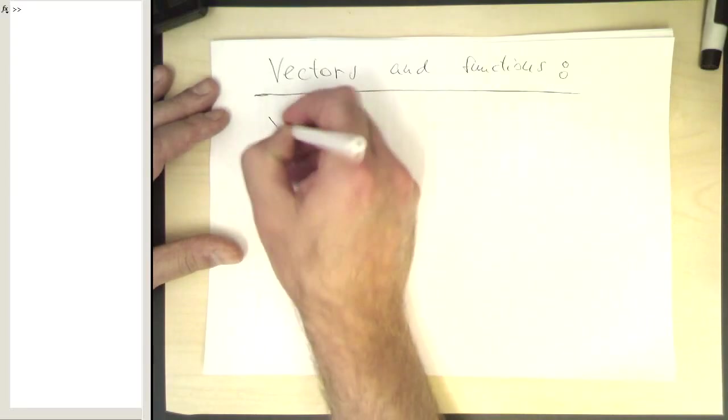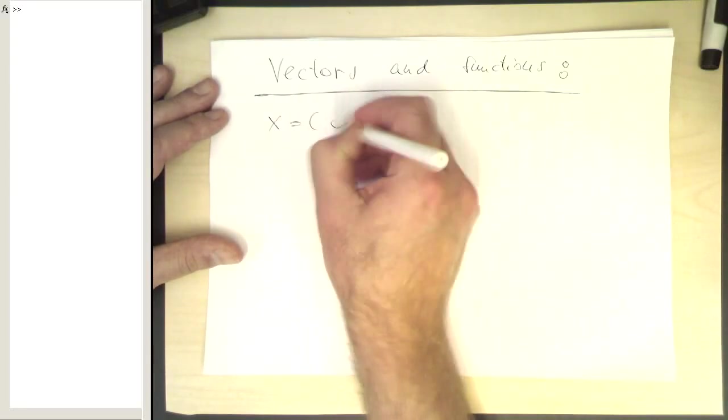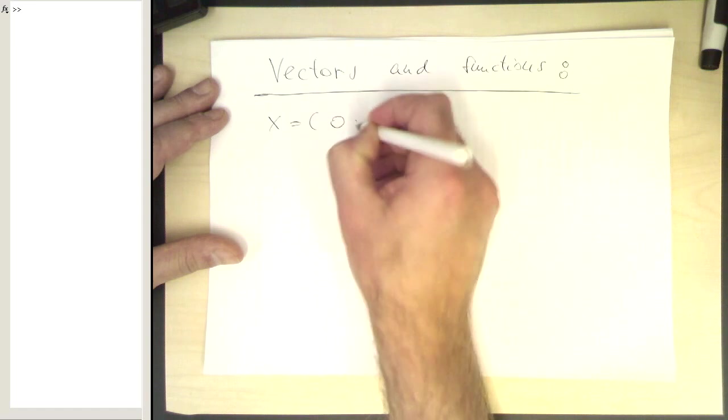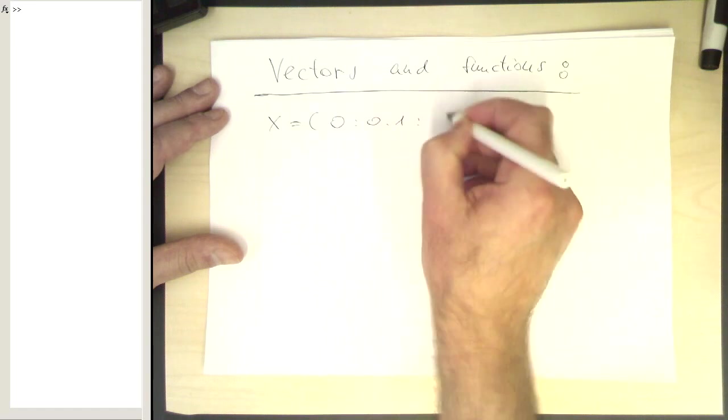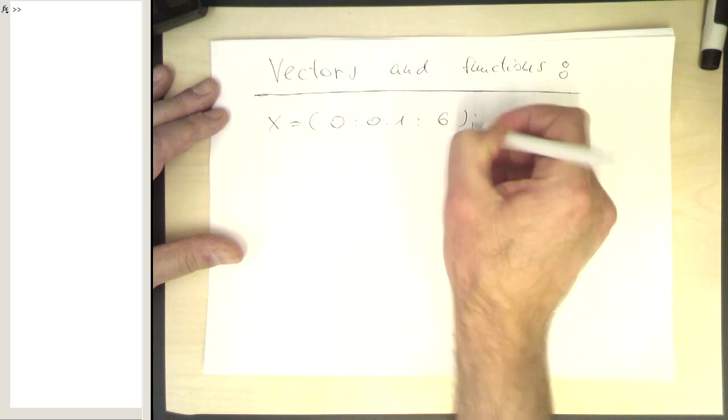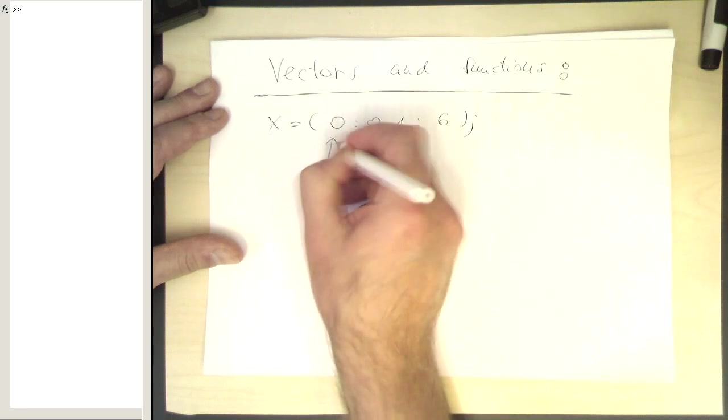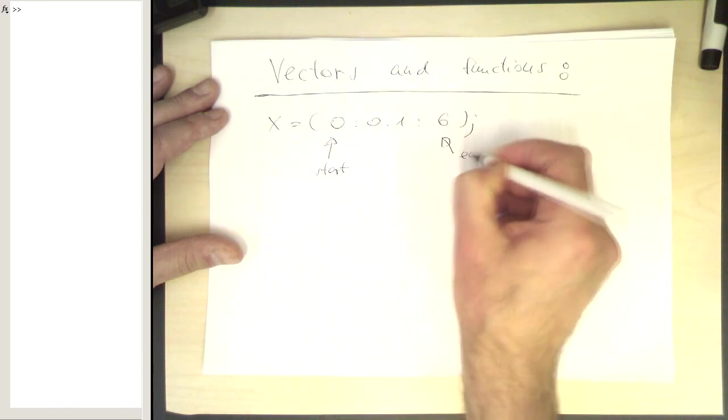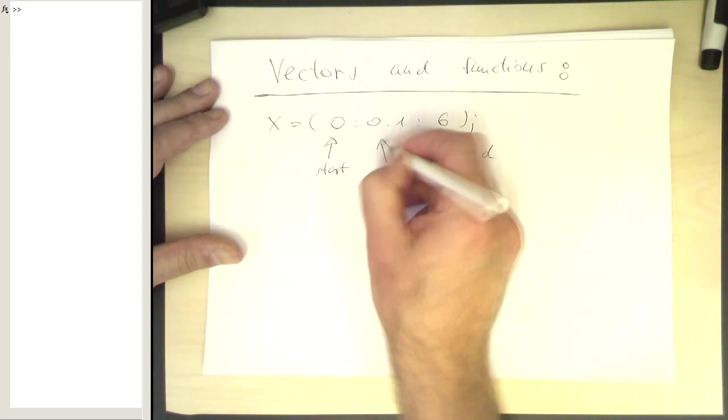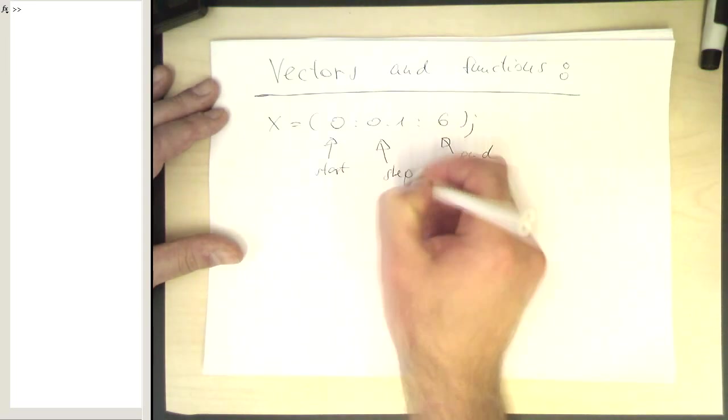Let's create a vector of this style. So we start with 0 and then increase it by steps of 0.1 and we run it up to 6. Remember this was our start point, this is our end point, and that's our step width.